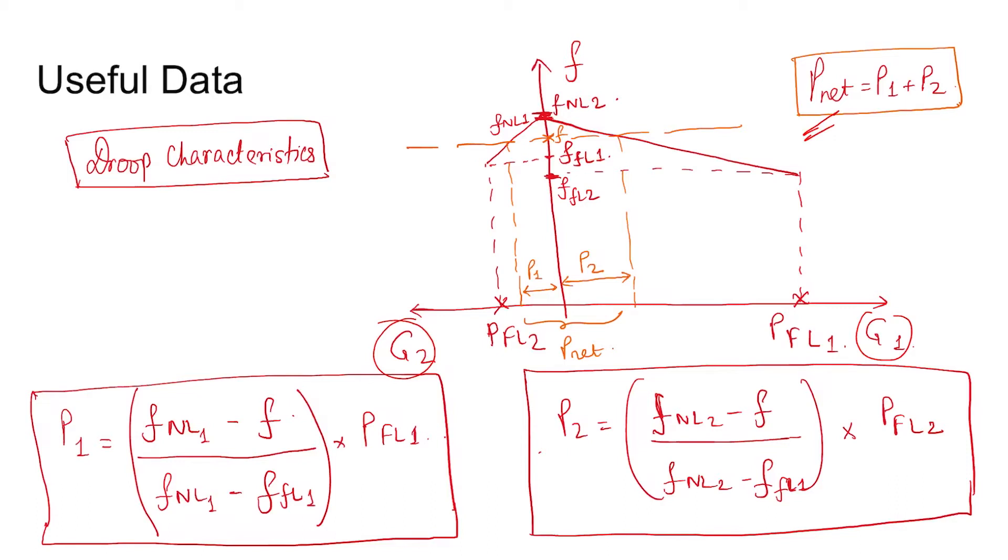But as the load on both the generators increases, the frequency reduces. Since they are connected in parallel, the final operating frequency for a given load is same, so let that be f.